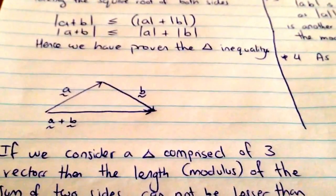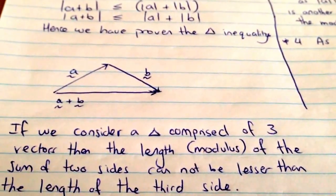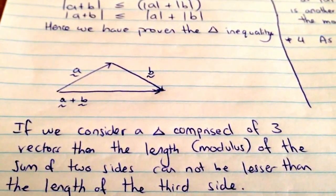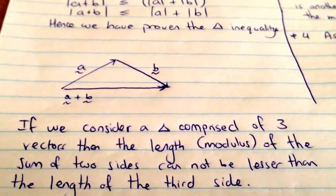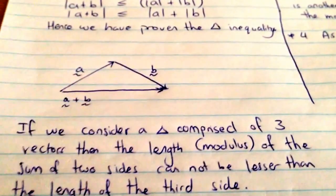But you're probably thinking, so what? What is this triangle inequality? Why is it so important? Let's consider three vectors that make up a triangle. We have vector a, vector b, and hence, if we look at the resultant vector, which is this one here, we have vector a plus b.